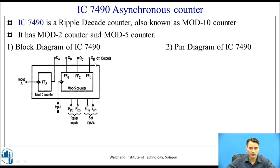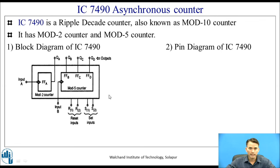QD is the MSB bit and QA is the LSB bit. There are also reset inputs R1 and R2 and set inputs S1 and S2. Whenever the reset inputs are activated (active high), the output will be 0000. Whenever the set inputs are activated (active high), the output will be set to the terminal value 1001, as it is a decade counter.